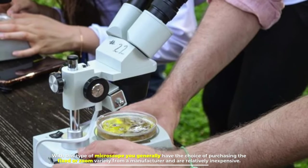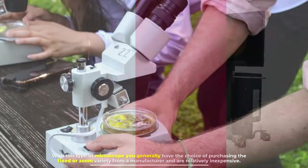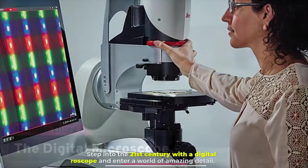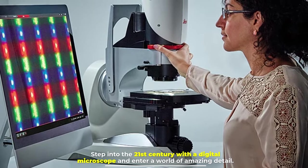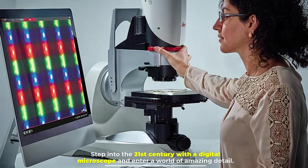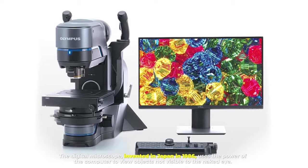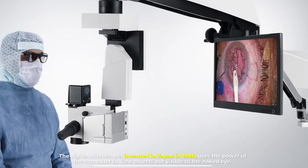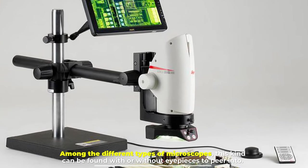Number three: the digital microscope. Step into the 21st century with a digital microscope and enter a world of amazing detail. Invented in Japan in 1986, the digital microscope uses the power of the computer to view objects not visible to the naked eye. Among the different types of microscopes, this kind can be found with or without eyepieces.